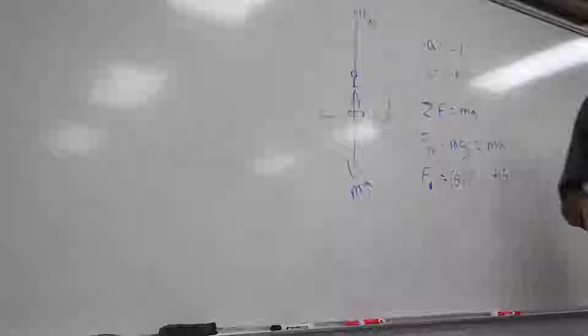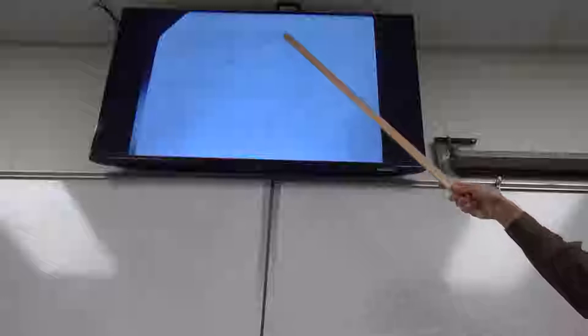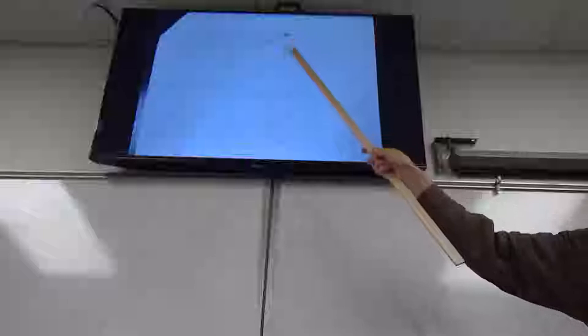Now the free response problem. There's a 10 kg mass, a 5 kg mass, and a 10 kg mass all connected by ropes. There are two different ropes — rope A and rope B — so they don't have to have the same tension. The tension is the same everywhere within one rope, but different ropes can differ.